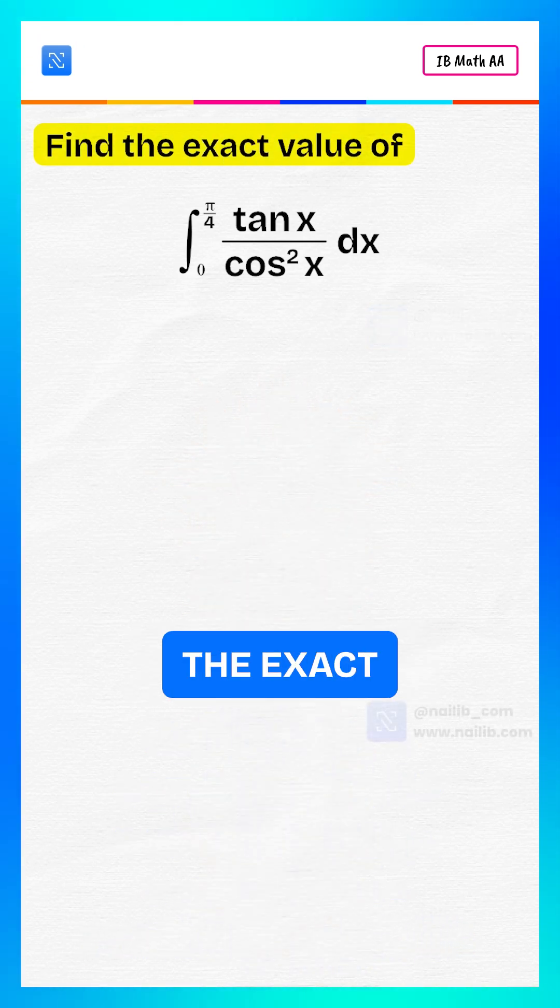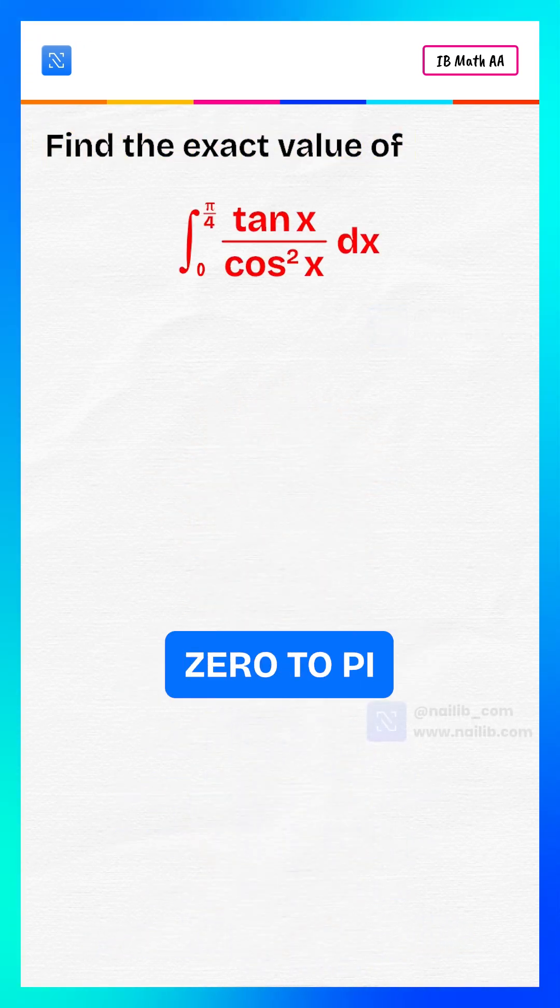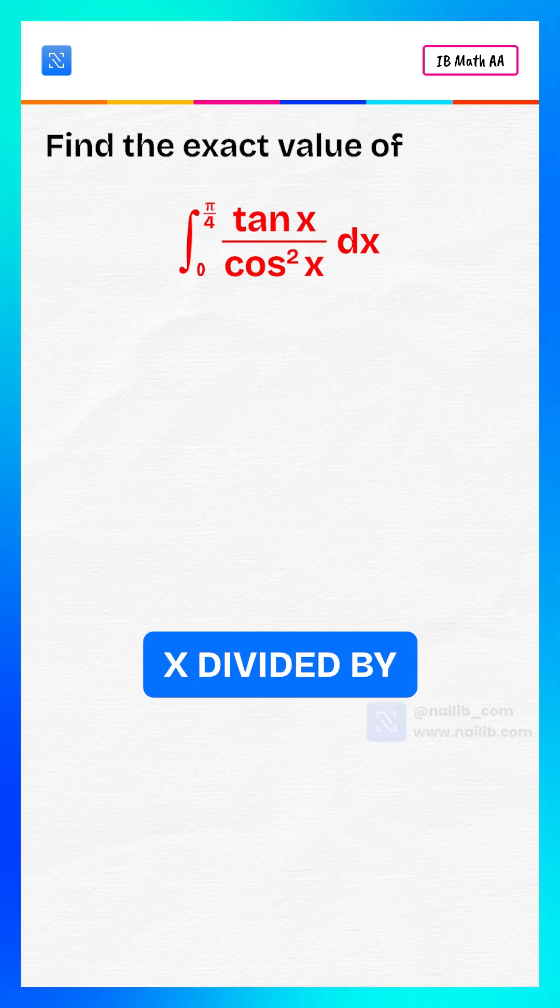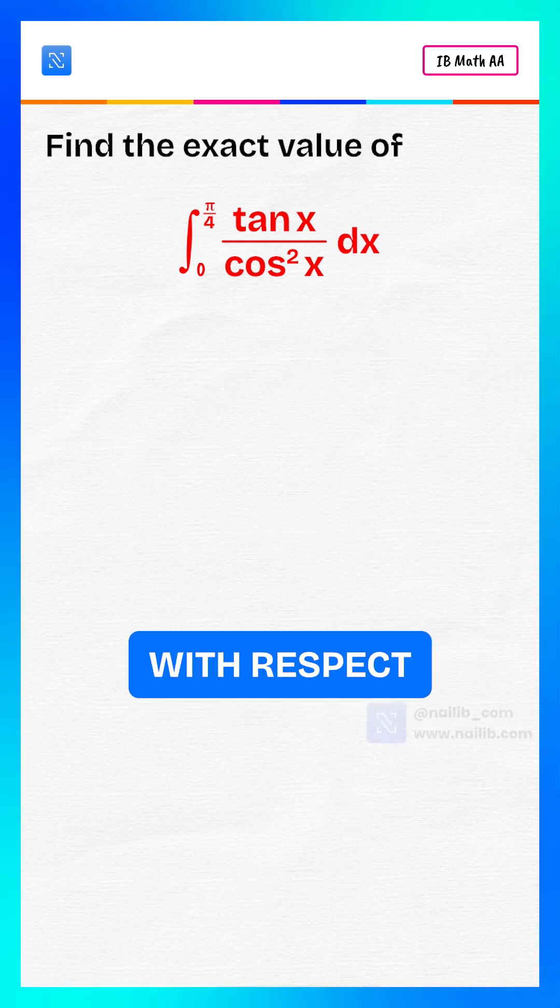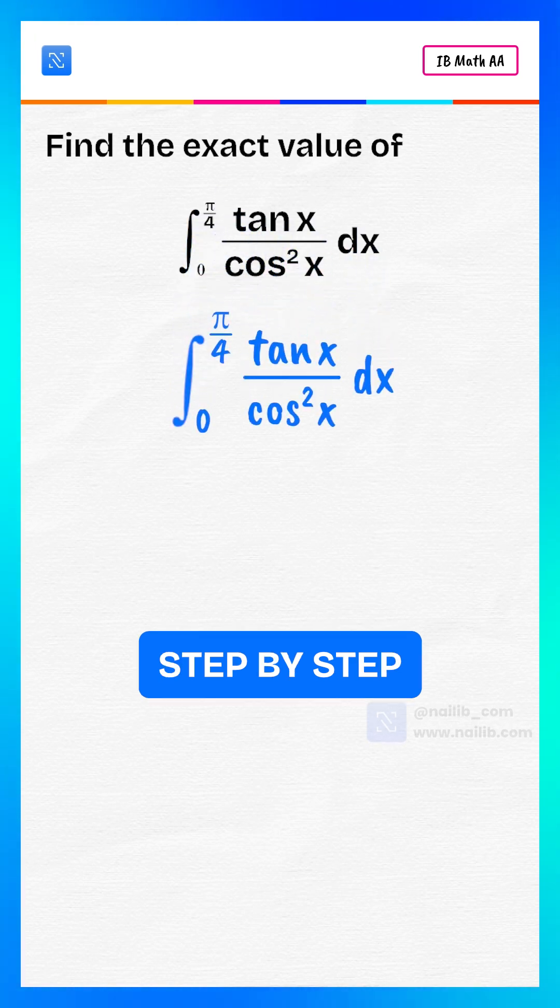We're finding the exact value of the integral from zero to pi by four of tan x divided by cos squared x, with respect to x. Let's solve step by step.